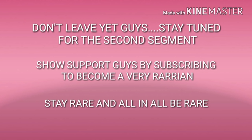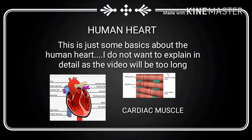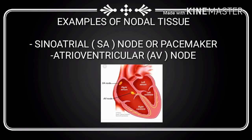Welcome to the second segment of this video, where we talk about the human body — specifically the human heart. The human heart comprises four chambers: two atria and two ventricles — the right and left atrium and the right and left ventricle. The heart is basically made up of cardiac muscles and nodal tissue. Nodal tissues are tissues that have both muscular and nervous characteristics; examples include the sinoatrial node and the atrioventricular node.